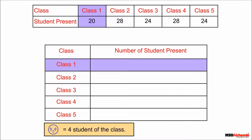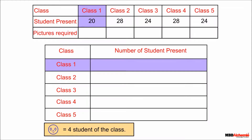We use one picture to represent 1 or more than one number. Here, we can represent 4 students using one picture, as the number of present students in each class can be divided by 4. The number of present students in class 1 is 20. On dividing 20 by 4, we get 5. So we draw 5 pictures for class 1. In other words, 1 picture stands for 4 students.